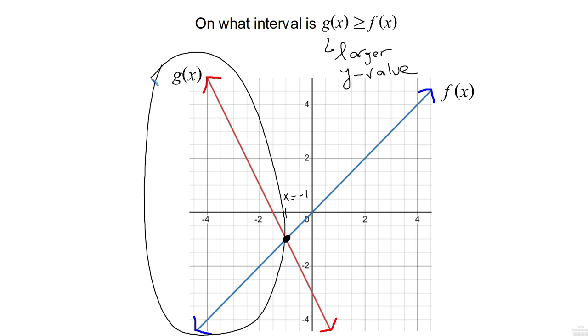So our interval on which g(x) is greater than or equal to f(x) starts, well, these are both going towards negative infinity over here. So that interval starts at negative infinity, and it ends when we hit x equals negative 1. Now, because it's an or equal to, we can include the point at x equals negative 1 with a bracket.